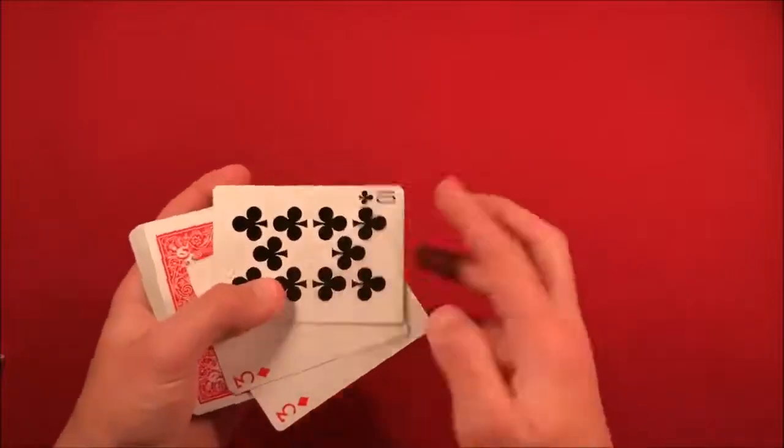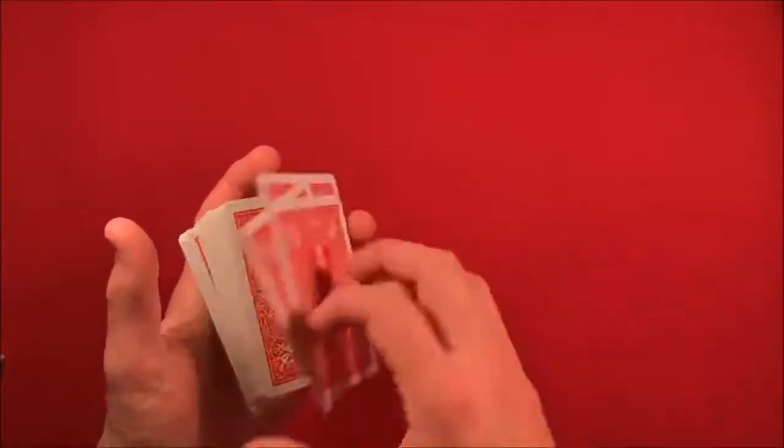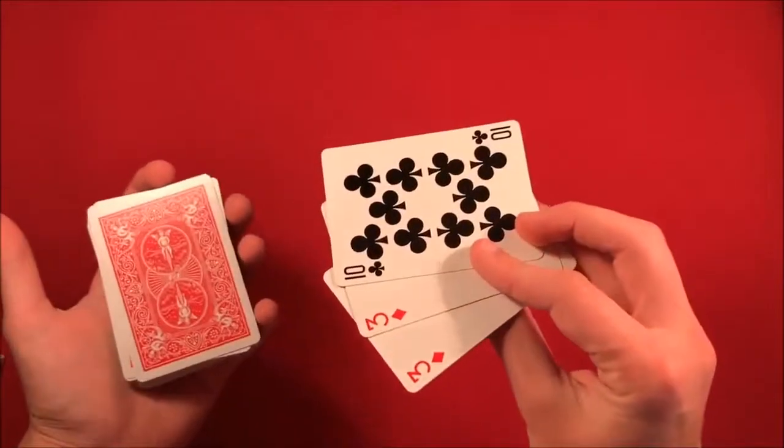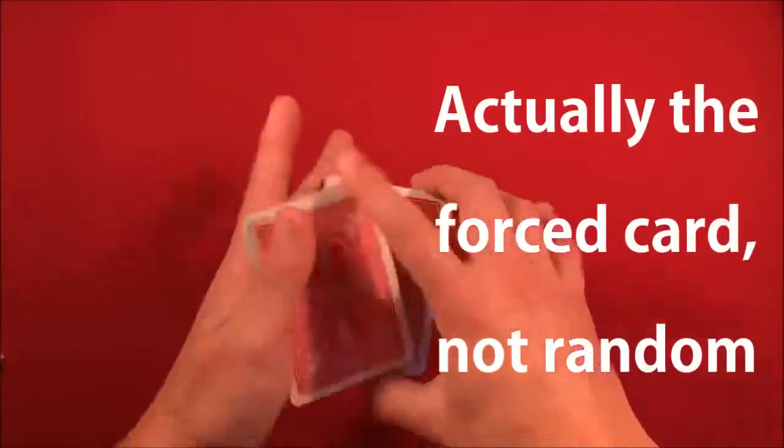So basically he starts off the trick. It's kind of like a here-then-there card trick by David Blaine, like a really simple one. So essentially you have two duplicate cards on top of the deck and then just any random card below it.